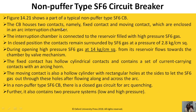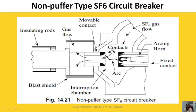The circuit breaker houses two contacts — a fixed contact and a moving contact — which are enclosed in an arc interruption chamber. The interruption chamber is connected to a reservoir filled with high-pressure SF6 gas. In the closed position the contacts remain surrounded by SF6 gas at a pressure of 2.8 kg per centimeter square. During opening, high-pressure SF6 gas at 14 kg per centimeter square flows from the reservoir towards the chamber by a valve mechanism, and the arc gets interrupted.